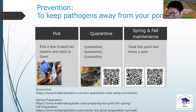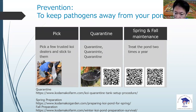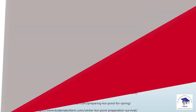Every time you have coir coming in, quarantine the coir in a separate isolated tank and observe them. Make sure that there is no issue before you introduce that coir to your main pond.